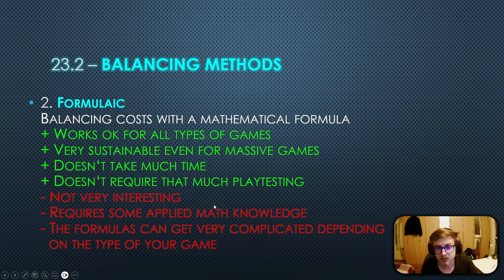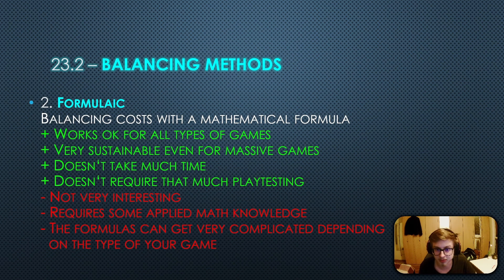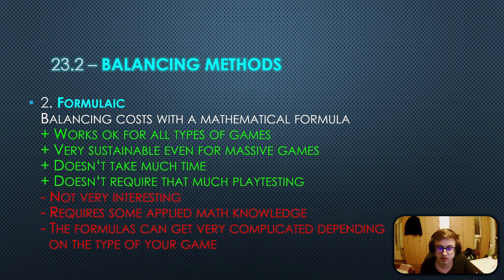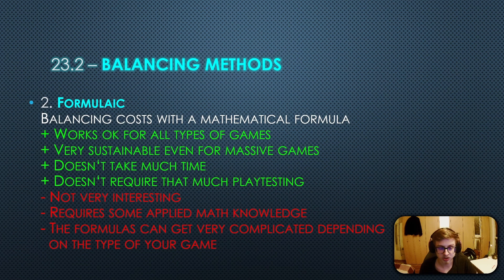The second balancing method is a formulaic one, which basically consists of balancing costs with a mathematical formula. This method works okay for all types of games, is very sustainable even for massive games, and doesn't take that much time or require that much playtesting. You should always playtest your game nonetheless. However, it's not very interesting, requires some applied math knowledge, and the formulas can get pretty complicated depending on the type of your game.